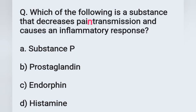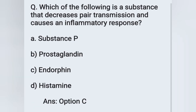Next question: Which of the following is a substance that decreases pain transmission and causes an inflammatory response? Option A: substance P, option B: prostaglandin, option C: endorphin, option D: histamine. The substance which decreases pain transmission is endorphin. Option C is the correct answer. Endorphins are a kind of neurotransmitter produced by the hypothalamus and pituitary gland — the body's natural painkillers.